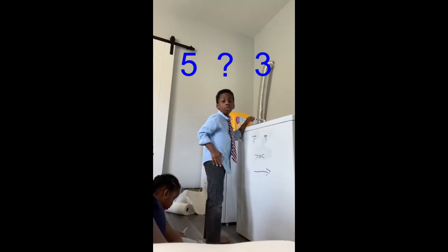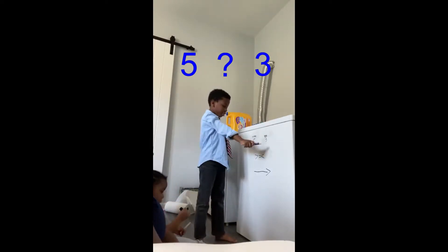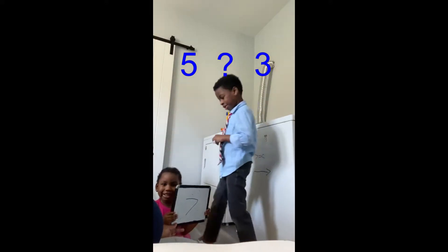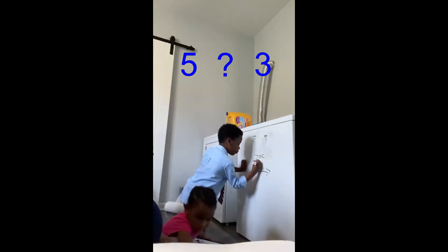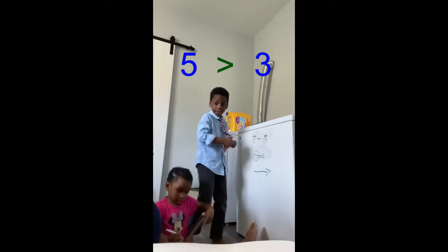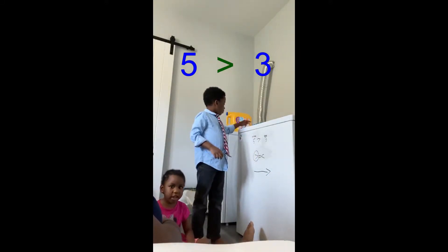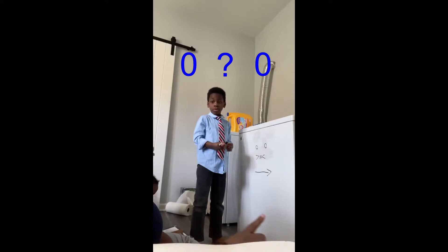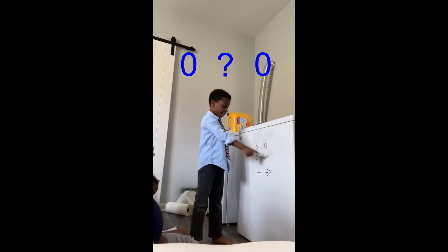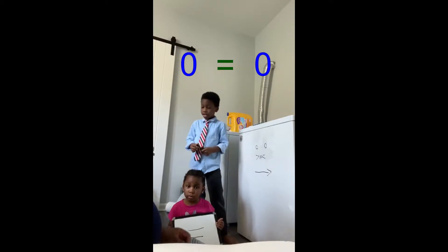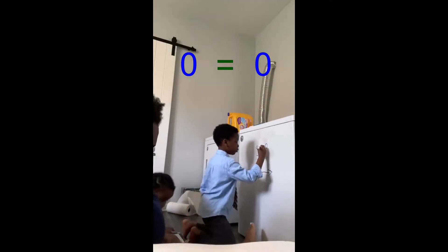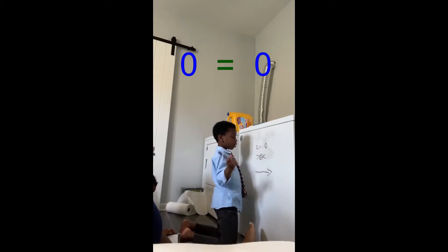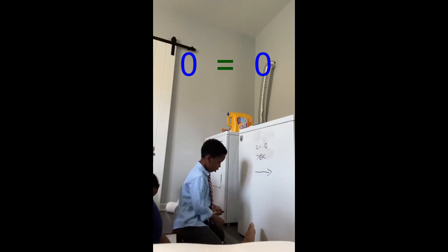Pop quiz! Which symbol belongs in this equation — greater than, equals, or less than? Greater than. That is correct. Five is greater than three. Which symbol goes in this equation — greater than, equal to, or less than? Equal. Good. Zero equals zero. That means it's the same.